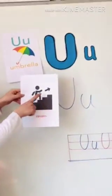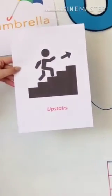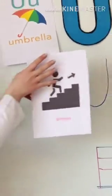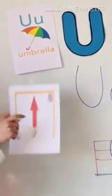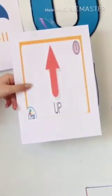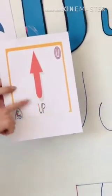Now we have five words that start with letter U. Next word is upstairs. Upstairs. Repeat after me: upstairs. Very good. We have another word: up. Up. Repeat after me: up. Very good.